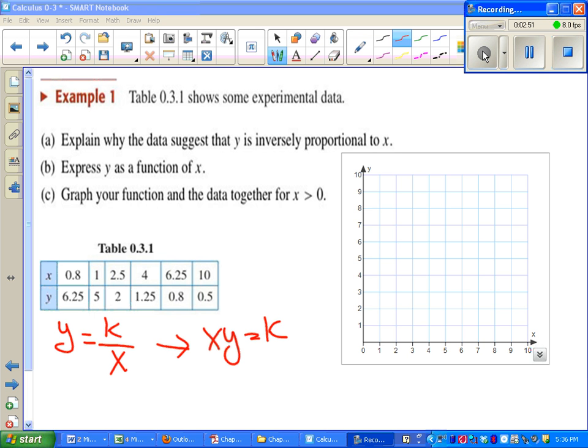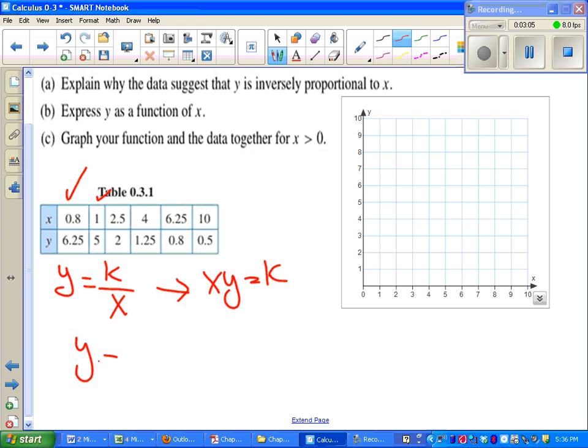If you thought k equals 5, you'd be right. No matter what two pairs of these numbers I multiply together, each x-y pair, 0.8 times 6.25 is 5, 1 times 5 is 5, and so on. So our formula would be y equals 5 over x.